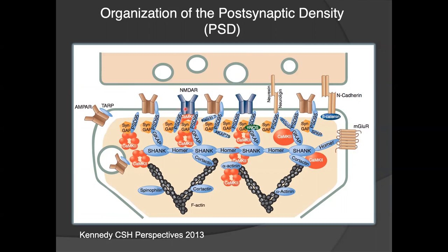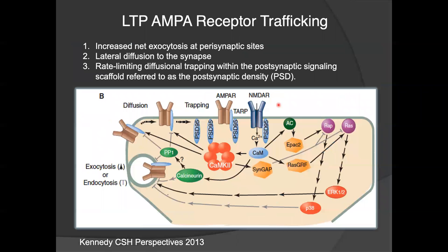There are also NMDA receptors and neuroligins. I'm interested in AMPA receptor trafficking during long-term potentiation, and this can be thought of as a three-step process. The first step is that there needs to be increased exocytosis at perisynaptic sites. The exocytosis or endocytosis — the insertion or removal of AMPA receptors — is controlled through RAP and RAS. When RAS is more highly activated, you will have a net increase in exocytosis and more AMPA receptors. When RAP is more active, you will have a net decrease in AMPA receptors because there will be an increase in endocytosis.